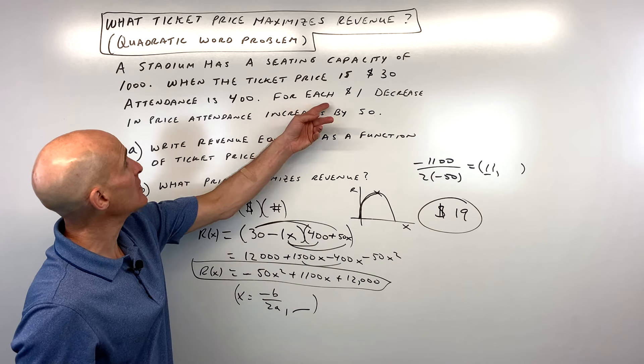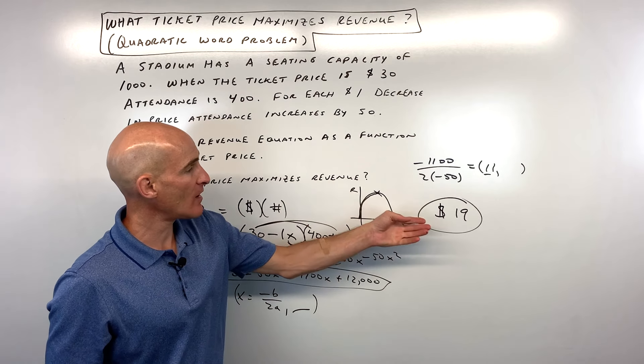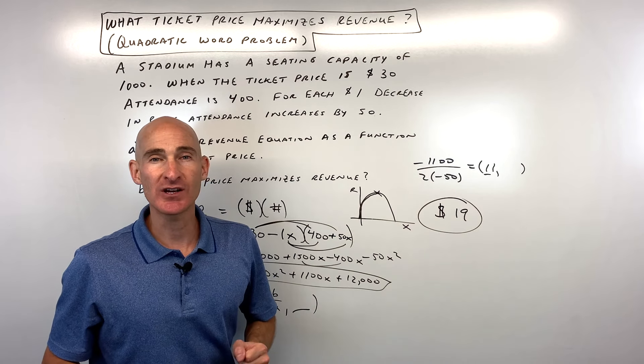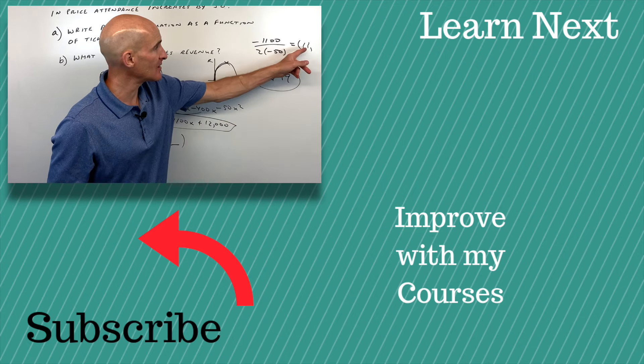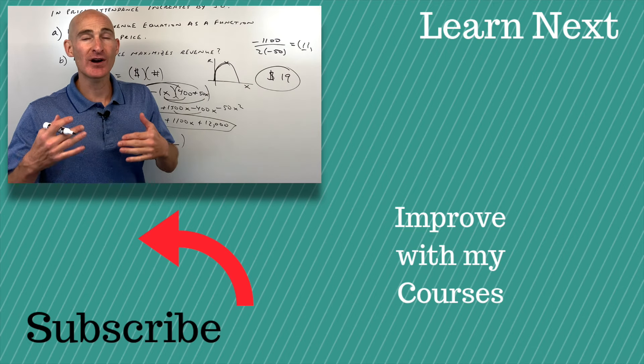It says for each one dollar decrease what price maximizes the revenue? A 19 dollar ticket price would maximize the revenue. Some people might mistakenly put 11. But that's the number of price decreases.